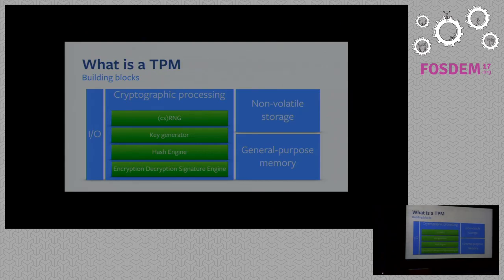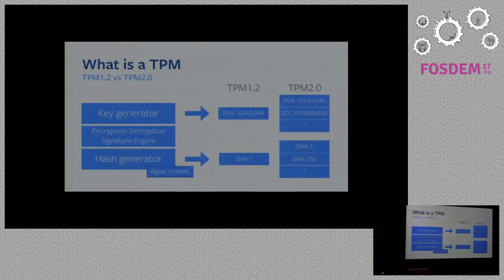At a very high level, these are the modules you can find in a TPM: an input-output module, cryptographic processing, non-volatile storage, and general-purpose memory. Basically, we can create objects on a TPM, like signature keys or for symmetric and asymmetric encryption, and we can make them persistent. Of course, this is limited storage, so not many keys can be stored in it.